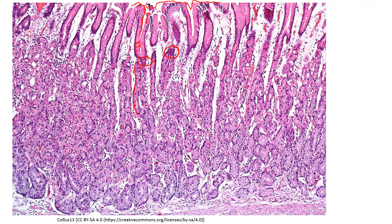Here you can see a gastric gland coming down — keep in mind these are three-dimensional structures, so it may appear to end because we're looking at a two-dimensional section and part of it went away from or toward us. As you move downward from the surface of the mucosa deeper into the lamina propria, the epithelial cells appear to change color: parietal cells higher up are more eosinophilic, so red in color, and then the chief cells lower down are more purple or blue.